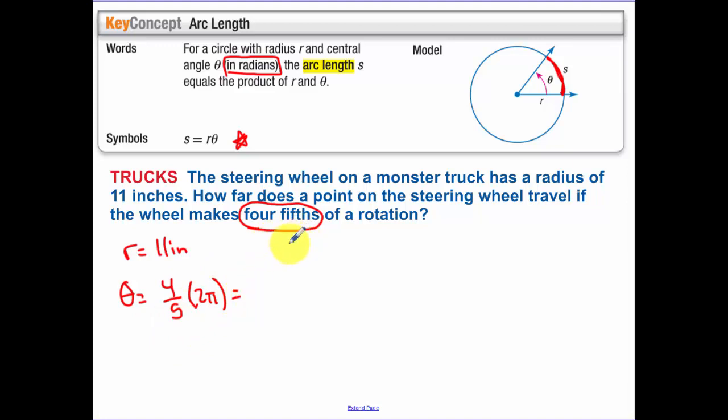So that is equal to 8 pi over 5. We know s equals r theta. So s equals our radius which is 11 times by our theta which is 8 pi over 5. So this works out to be 88 pi over 5.